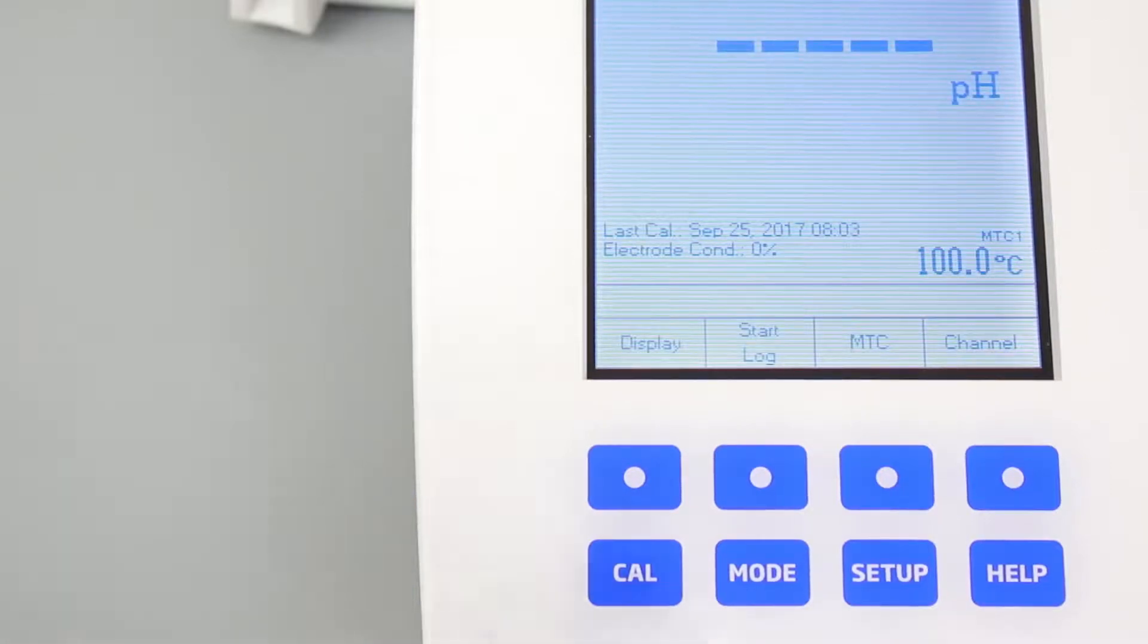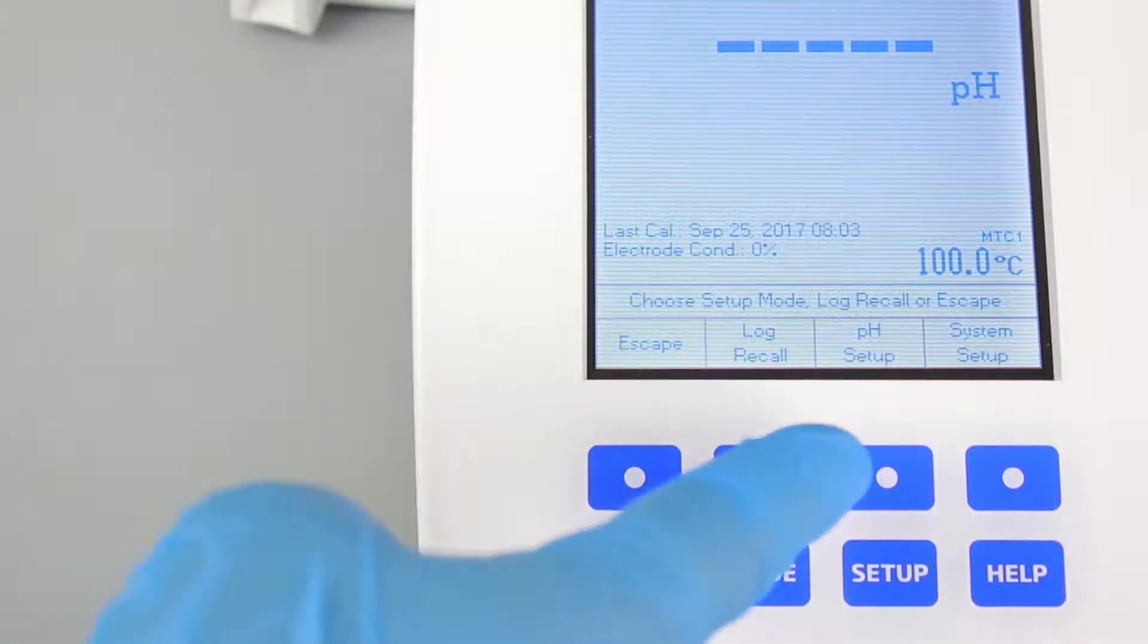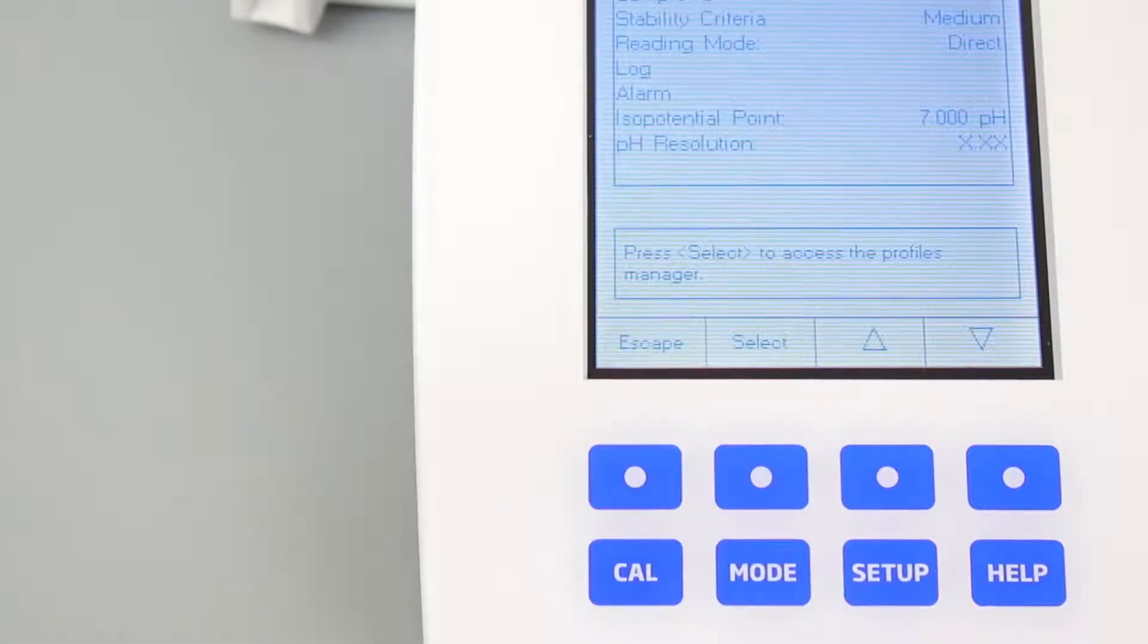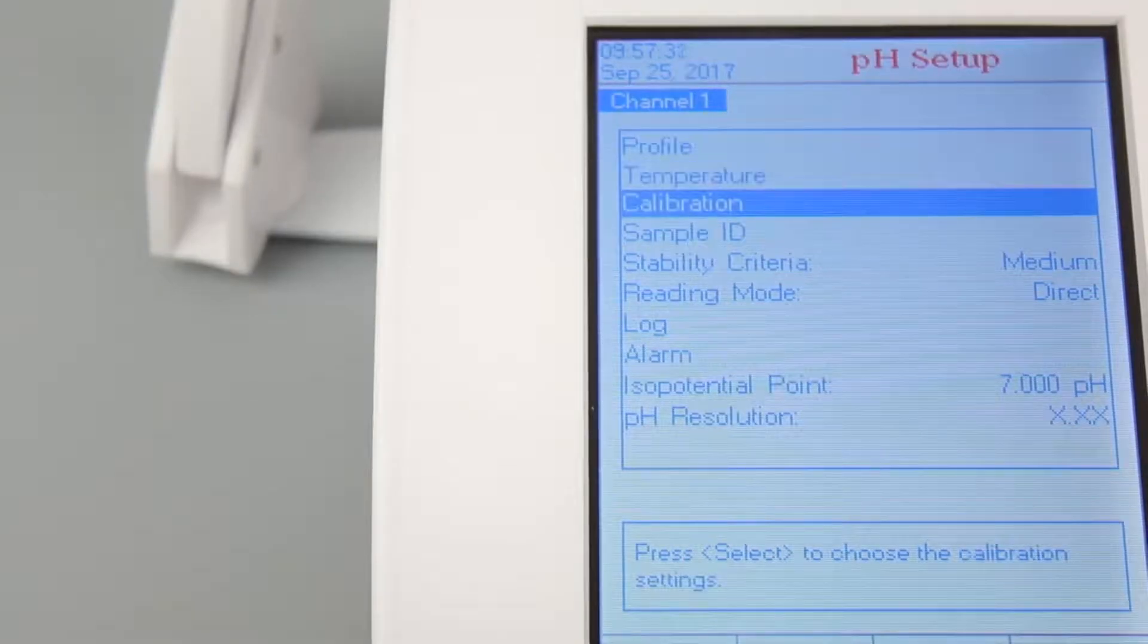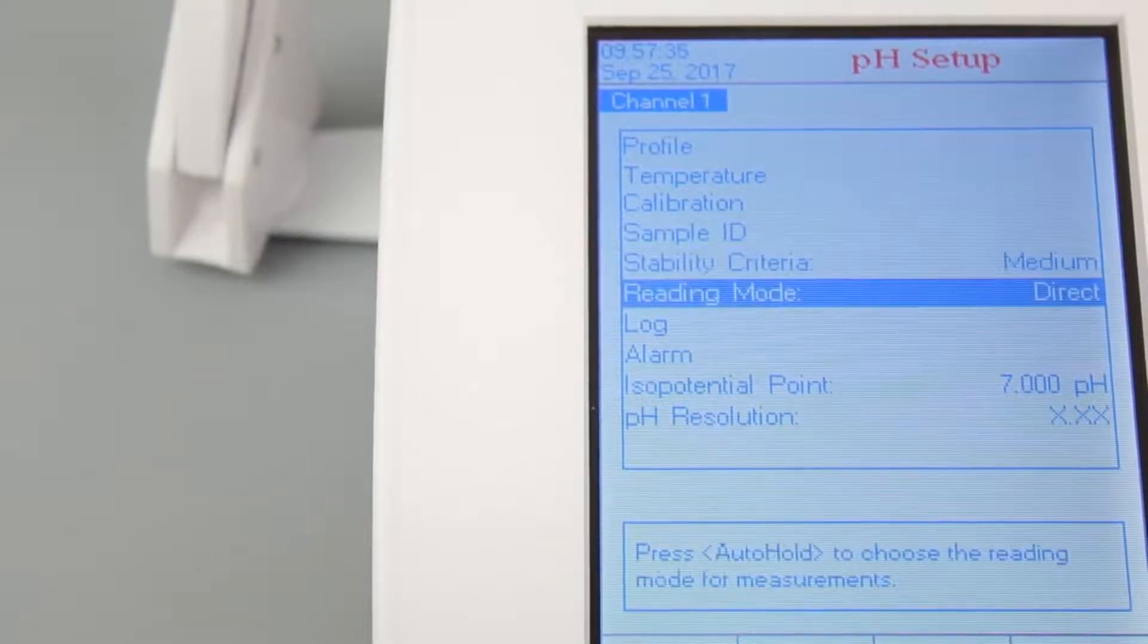Once you have set your preferences, hit ESC, SETUP, and then pH SETUP. This area of the setup menu is where you can change your temperature compensation settings, calibration preferences, and calibration reminders. The pH SETUP menu is a great way for you to ensure best practices for your lab are being followed.